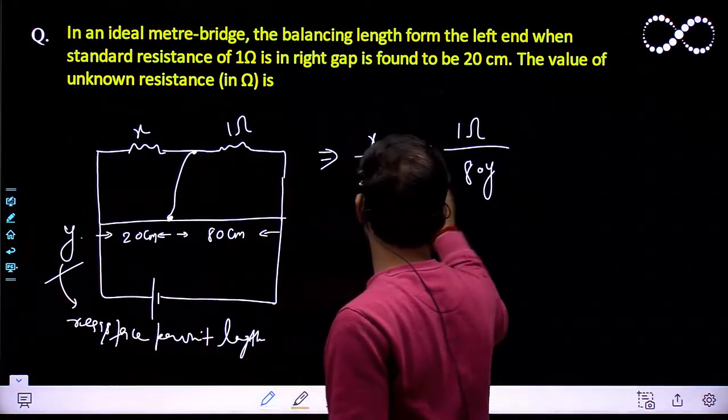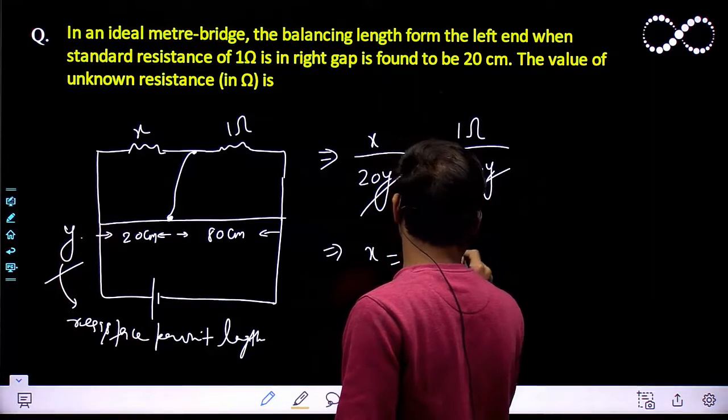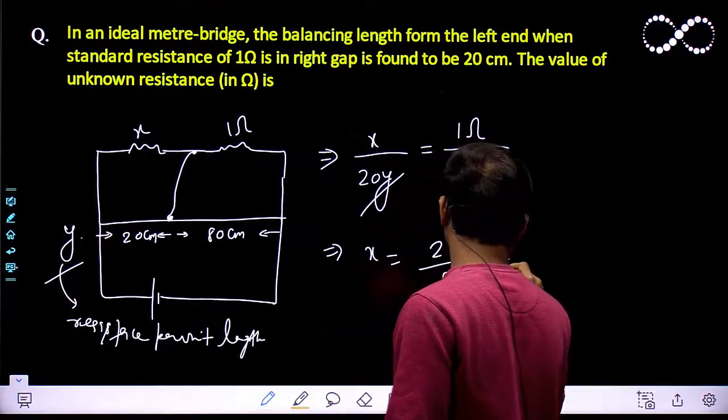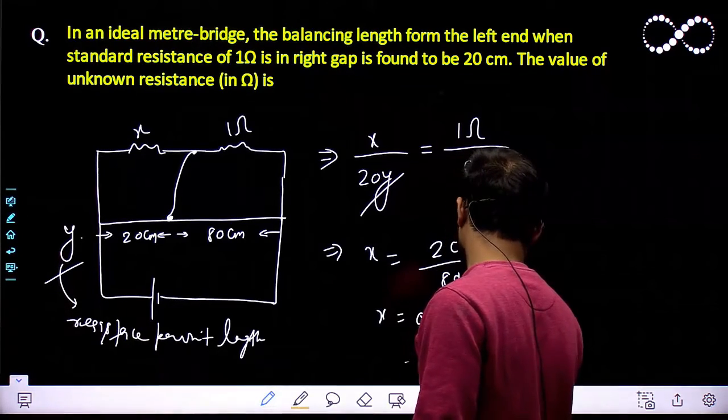So from here, this y will get cancelled out, and I can say x will be equal to 20 upon 80, and that will be equal to 1 upon 4. So x is coming 0.25 ohm. So this will be the answer.